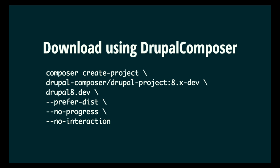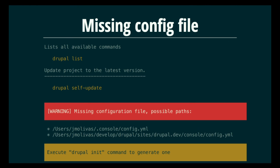Another thing you might notice using the latest version is complaints about the configuration file. If you run it for the first time, it tells you there's a missing configuration file, and if you're within a site, it shows possible options — the configuration can be either on the site or in the home directory. This is another change in RC1: you can keep configurations on a per-site basis, commit that configuration to your repo, and share it across your whole team. You can set specific configurations like disabling specific commands or forcing certain arguments in specific commands.